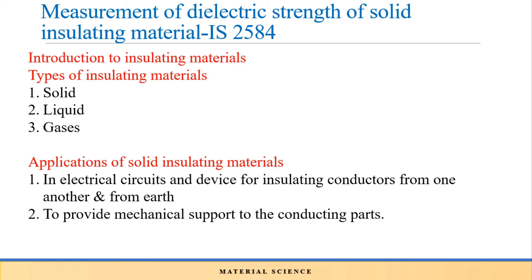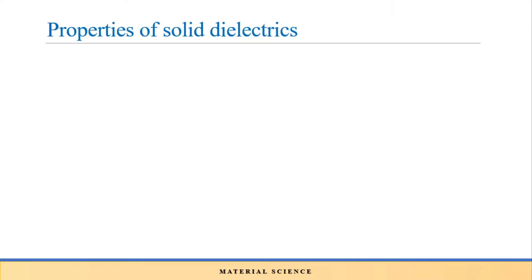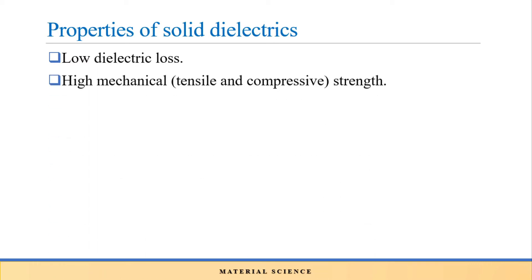Now we will discuss the different properties of solid insulating materials. The first property is low dielectric loss. Dielectric loss is the conversion of electrical energy into heat energy inside a dielectric material, and that dielectric loss should be low in case of solid insulating material.